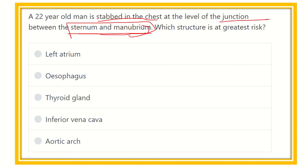The junction of the manubrium and body of the sternum is known as the angle of Louis. We have to find out which structure lies at the level of the angle of Louis. Since the stab is in the front of the chest, we need to identify the structure lying anteriorly at this level.